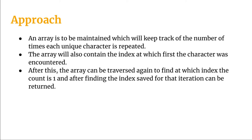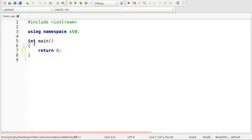The first field will store the number of times each unique character is repeated, and the second field will store the index at which that character first appeared. After building this array, we traverse it again to find the entry where count is one and return that stored index. For the second traversal we do not need to traverse the whole string.